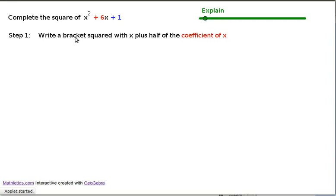So, the first step, write a bracket squared with x plus half the coefficient of x. Now the coefficient of x up here is this 6, and so we want a bracket squared with half of that 6, x plus 3 squared. Now if you look at that, if you are familiar with expanding just that x minus 3 all squared, that's going to come out to be x squared plus 6x plus 9.